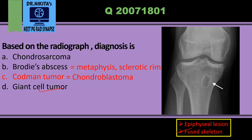Brody's abscess is generally seen in the metaphysis because it is essentially osteomyelitis, and osteomyelitis is more common in the metaphysis. It appears as an oval lesion, vertically oriented along the axis of the bone, with a sclerotic rim. A well-defined lytic lesion with a sclerotic rim in the metaphysis — the most common diagnosis is Brody's abscess, which is basically osteomyelitis.